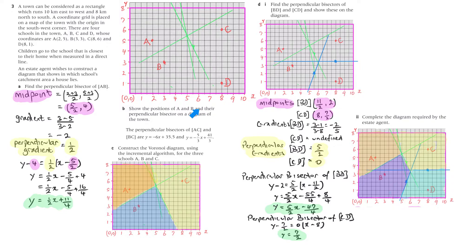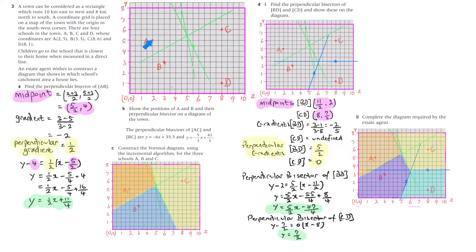Show the positions of A and B and their perpendicular bisector on a diagram of the town — well, we've already put those in, so there are the positions of A and B, and that's the position of the perpendicular bisector. The perpendicular bisectors of AC and BC — they've told us what the others are, so I've drawn them in here. The BC one has a negative slope, and the AC one is between those two points.